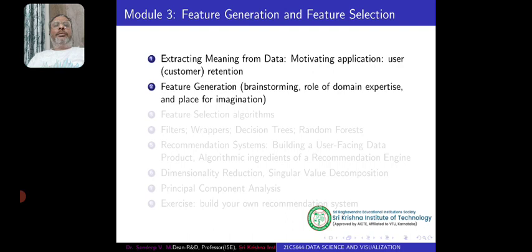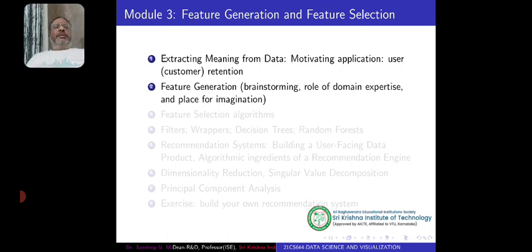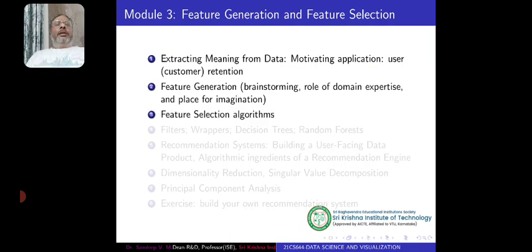The hundreds of columns may be directly useful, or sometimes they may not be directly useful. In that case, we need to combine columns and get some additional results — this is called feature generation. Here we need brainstorming, and we need to check how domain experts are useful, what roles they play, and what problems we face if domain experts are not available. There is also a place for imagination in this process.